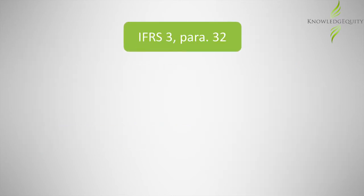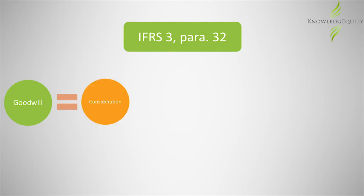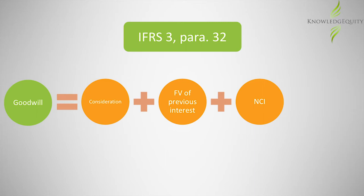IFRS 3 paragraph 32 sets out the formula for the calculation of goodwill, which is: purchase consideration, plus the fair value of previously held equity interest in the acquiree, plus the amount of non-controlling interest, minus the fair value of the identifiable net assets of the acquiree.